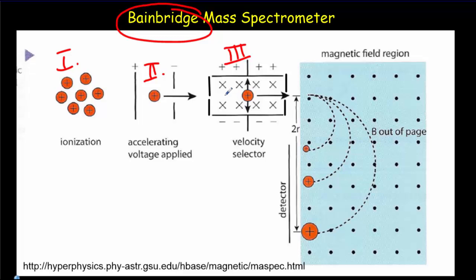The velocity selector region narrows down that range of velocities so you've got a very narrow range coming through with their speed known very precisely. They then go into a fourth region where there's a magnetic field and they execute circular motion. The different isotopes will be separated and it will be possible to determine the mass of each isotope.